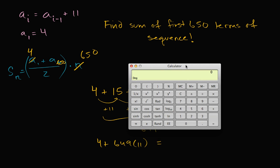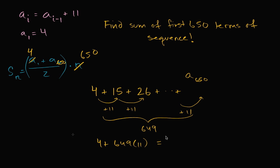Four plus 649 times 11 is equal to 649 times 11 plus four, which equals 7,143. So that's the 650th term.